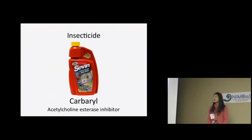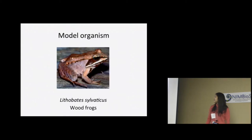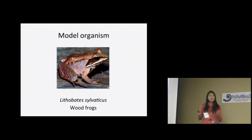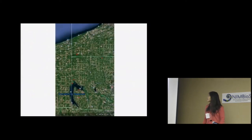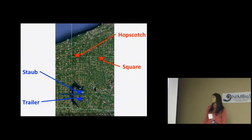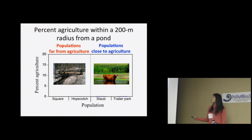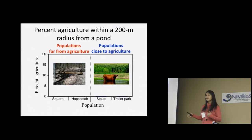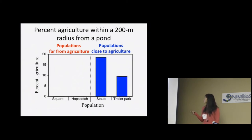To test these hypotheses, I worked with the insecticide carbaryl, an acetylcholinesterase inhibitor commonly found in hardware stores. My model organism is Lithobatis sylvaticus, the wood frog — a wonderful model organism as they are explosive breeders, useful for obtaining large numbers of organisms at the same developmental stage. I went to four different populations in northwestern Pennsylvania that varied in their percent agriculture within a 200-meter radius from the pond — the distance wood frogs are known to travel. The red will represent populations far from agriculture, and blue will represent populations close to agriculture.